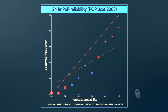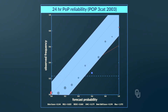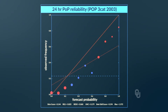We would prefer all the forecasted probabilities to match perfectly the observed frequency, so all the dots lie on the diagonal. Furthermore, we would prefer the forecasted probabilities be at the extremes — big dots at either 0% or 100%.